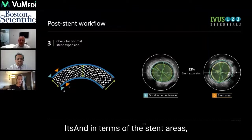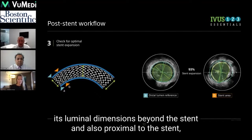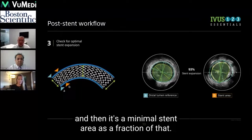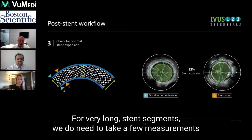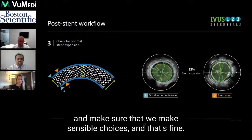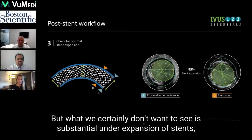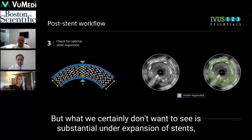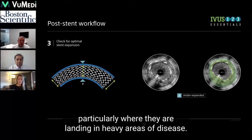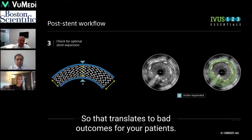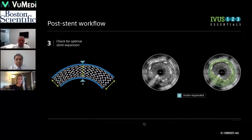In terms of the stent areas, it's luminal dimensions beyond the stent and also proximal to the stent, and then it's the minimal stent area as a fraction of that. For very long stented segments, we do need to take a few measurements and make sure we make sensible choices. What we certainly don't want to see is substantial under-expansion of stents, particularly where they're landing in heavy areas of disease — that translates to bad outcomes for your patients.